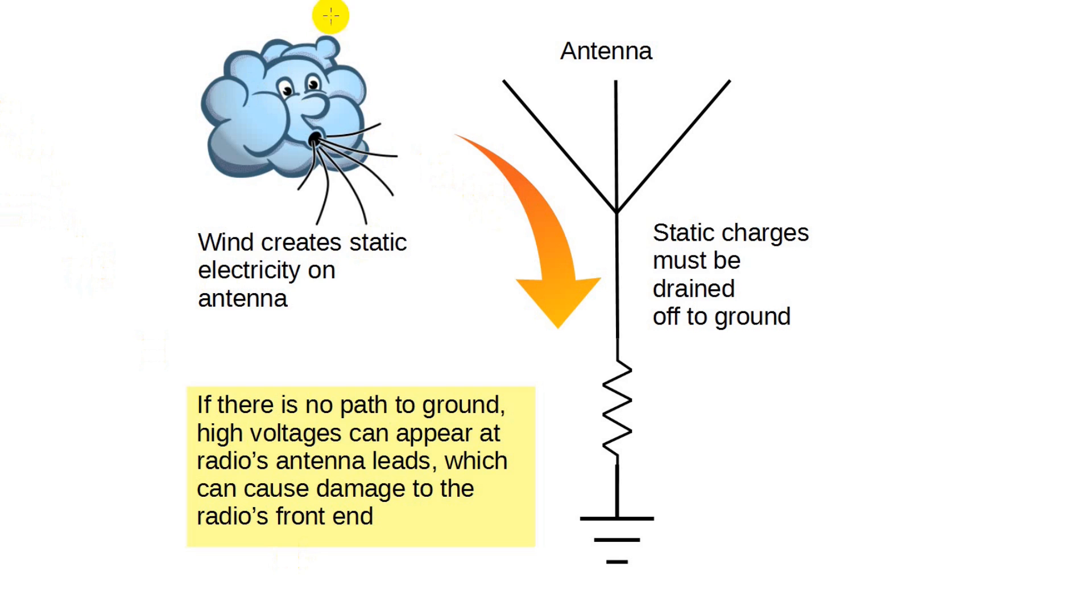I've mentioned in previous videos that wind blowing across an exposed antenna wire can create an electrostatic charge. The wind takes away some of the electrons and in the process, the wire becomes positively charged. Now, electricity wants to complete a circuit, so it looks for a way to ground. In your station, you need to provide this path, otherwise you can find rather large electrostatic voltages at the RF input.